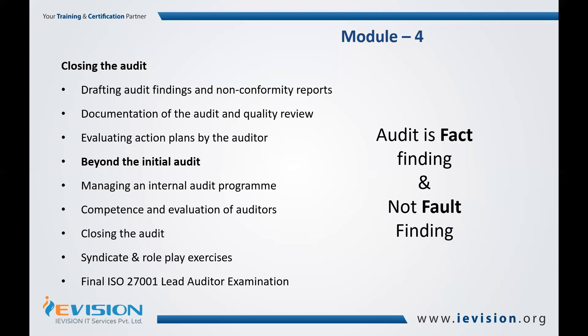Beyond the initial audit, there is the surveillance audit. The ISO 27001 standard certification for an organization is valid for three years with conditions: the first year is a full audit, and the second and third years involve surveillance audits. Once the organization fulfills the requirements, they are certified after completing the full audit. Continued certification depends on the surveillance audits. You will understand surveillance audits, and we will do role play exercises on that.